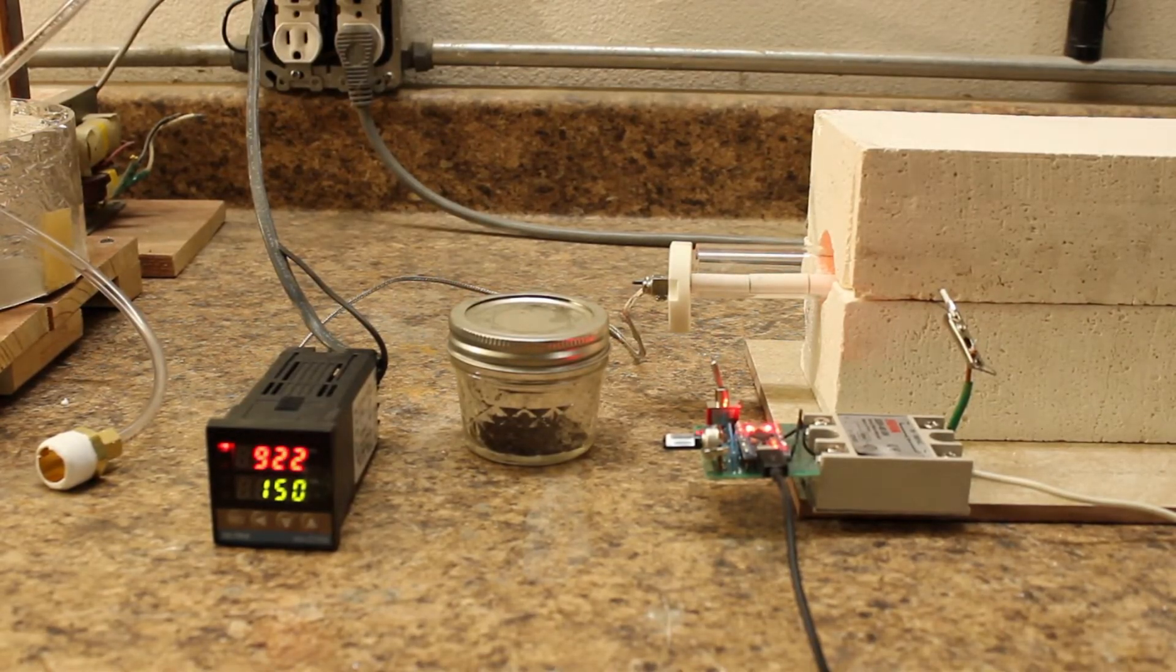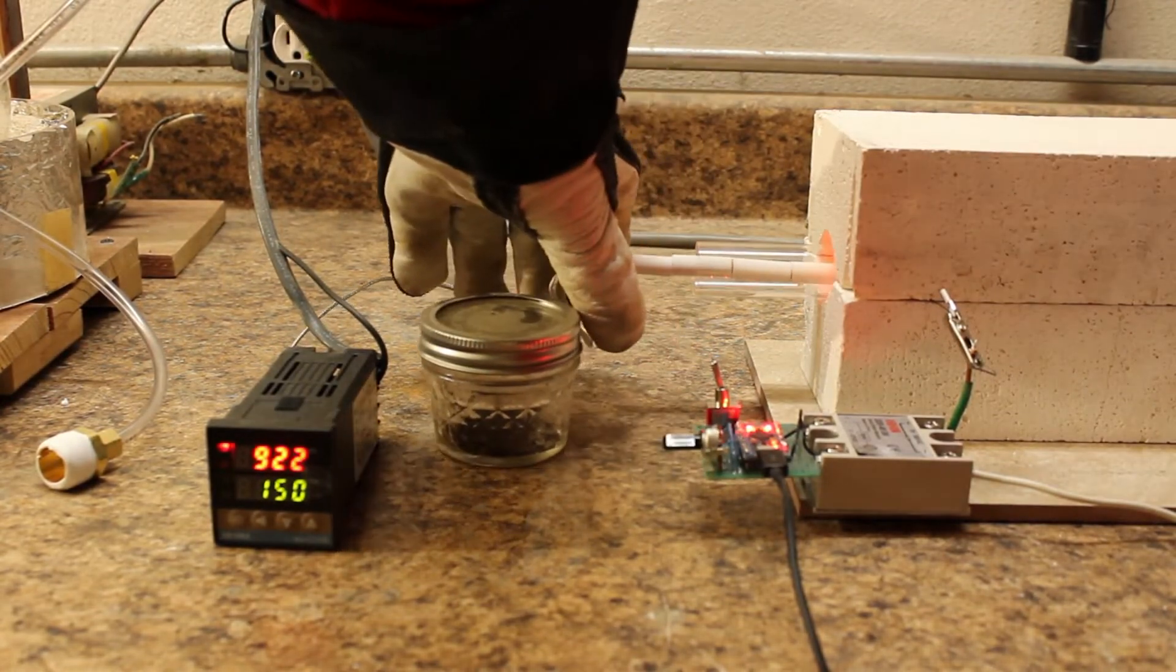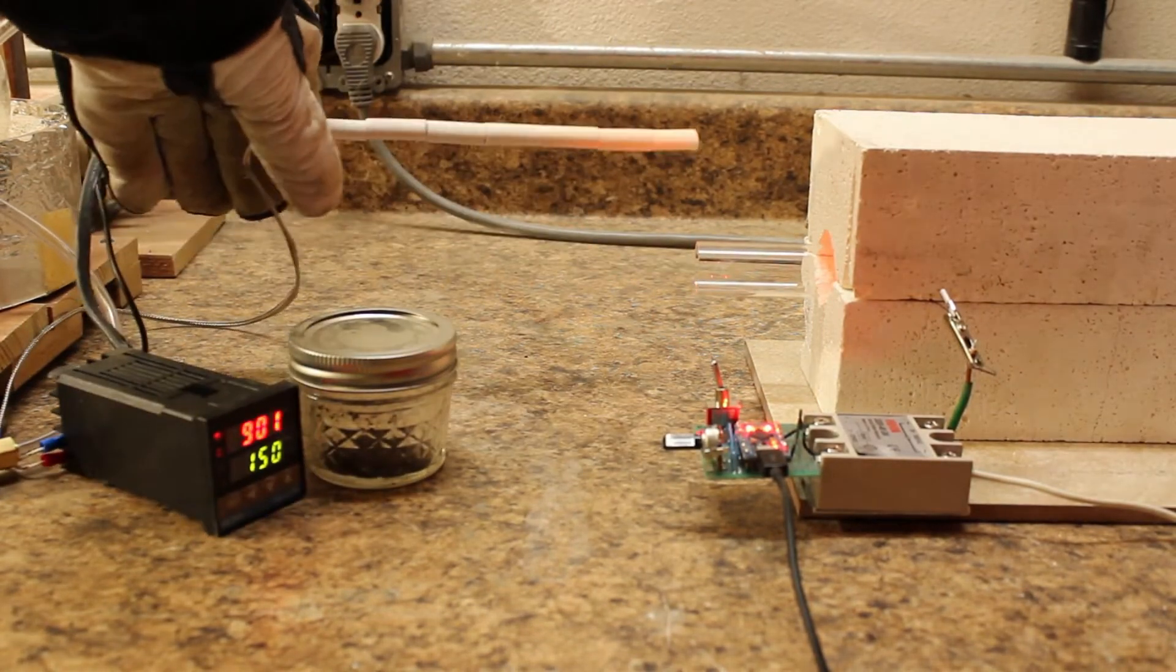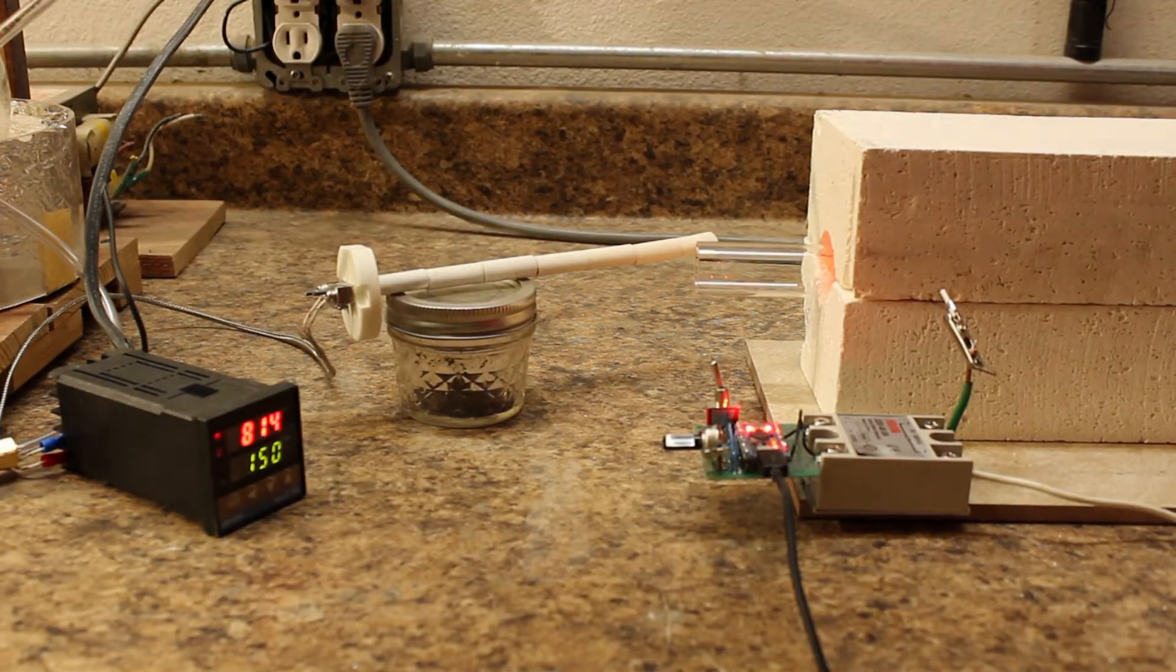I wrapped the nichrome wire around the quartz tube to have a resistance of about 10 ohms. I then carved the fire brick with a hole saw while making sure not to leave in any of the dust when carving.